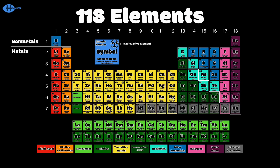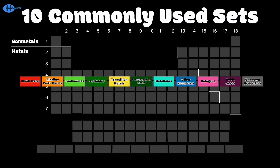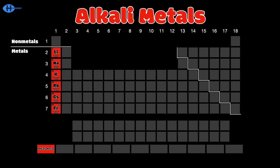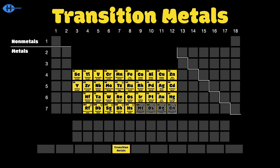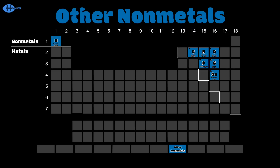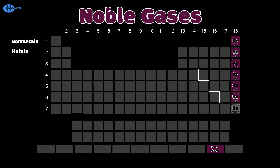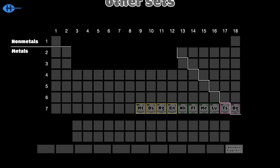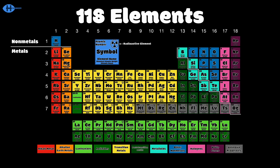Let's check out the 10 commonly used sets of the periodic table: alkali metals, alkaline earth metals, lanthanides, and actinides, transition metals, post-transition metals, metalloids, and other non-metals. The final two sets are the halogens and the noble gases. Elements 109 to 118 have unknown properties but are expected to be classified within these sets.